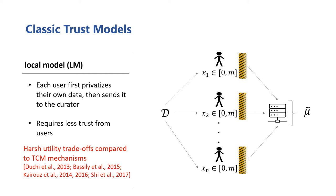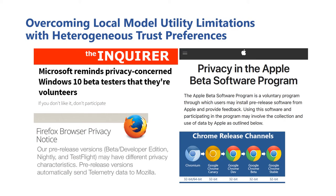Unfortunately, the downside is that the utility of mechanisms in the local model are known to typically be worse — sometimes significantly so — than the analogous mechanisms in the trusted curator model. Any time a differentially private computation is going to be performed, one of these trust models needs to be chosen. To make this choice, we have to consider the trust preferences of the users whose data we'll be using.